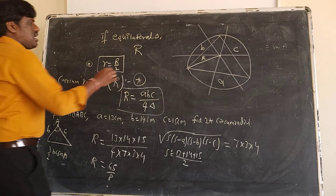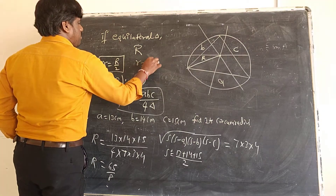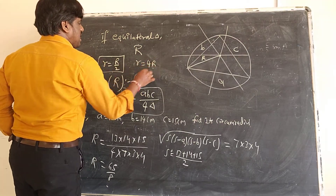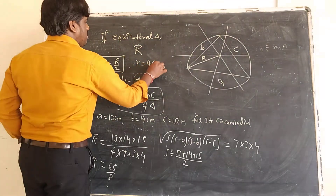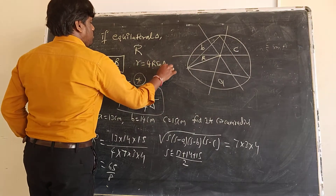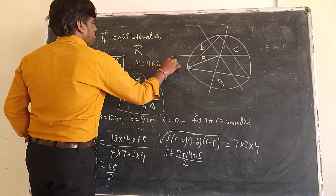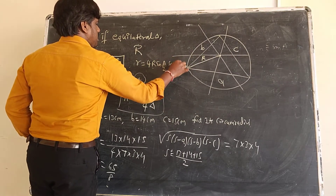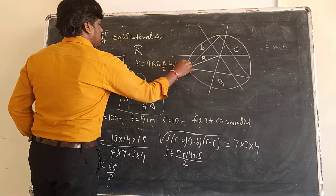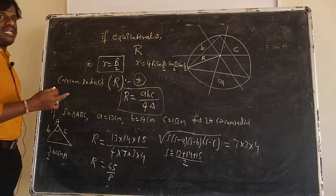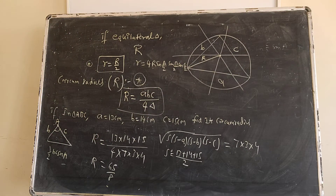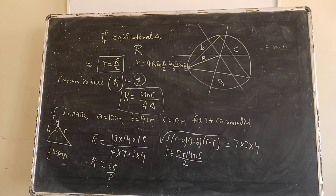Another formula is: r = 4R · sin(A/2) · sin(B/2) · sin(C/2). This is the relationship between capital R and small r. We will do incenter and circumcenter problems tomorrow.